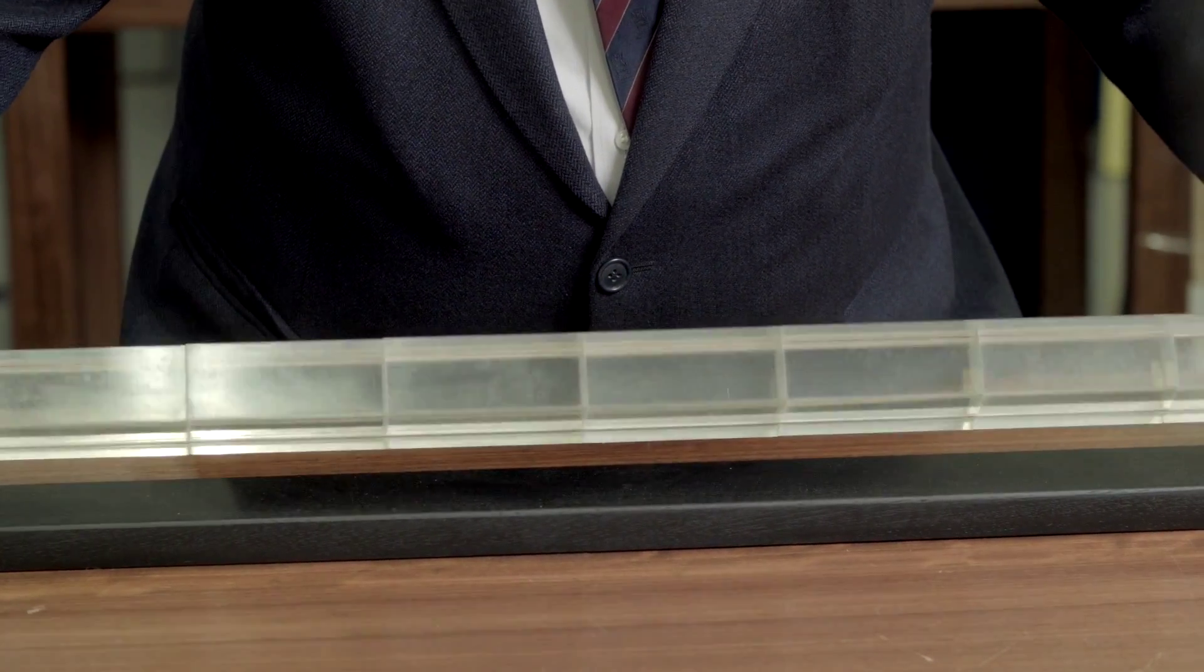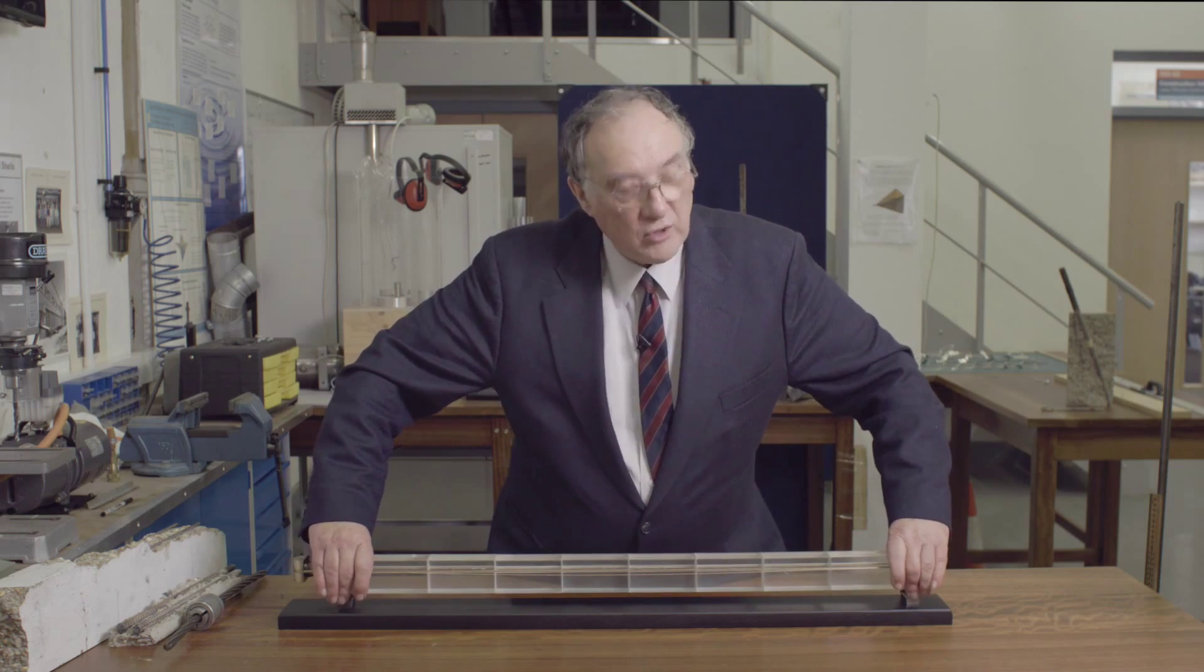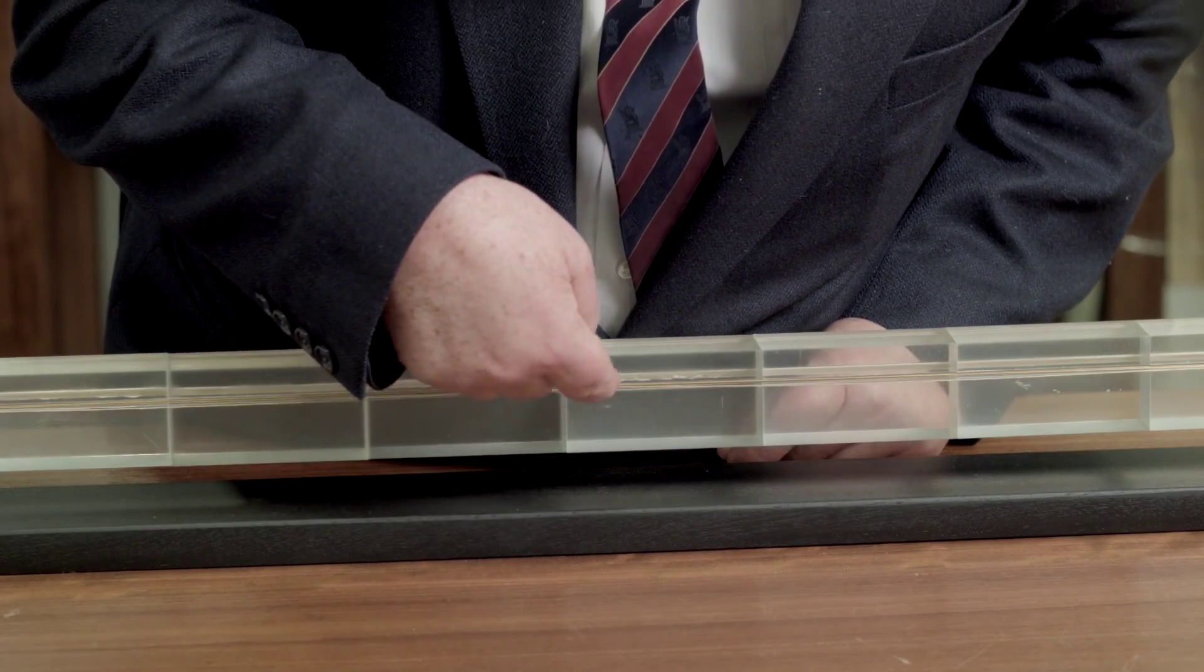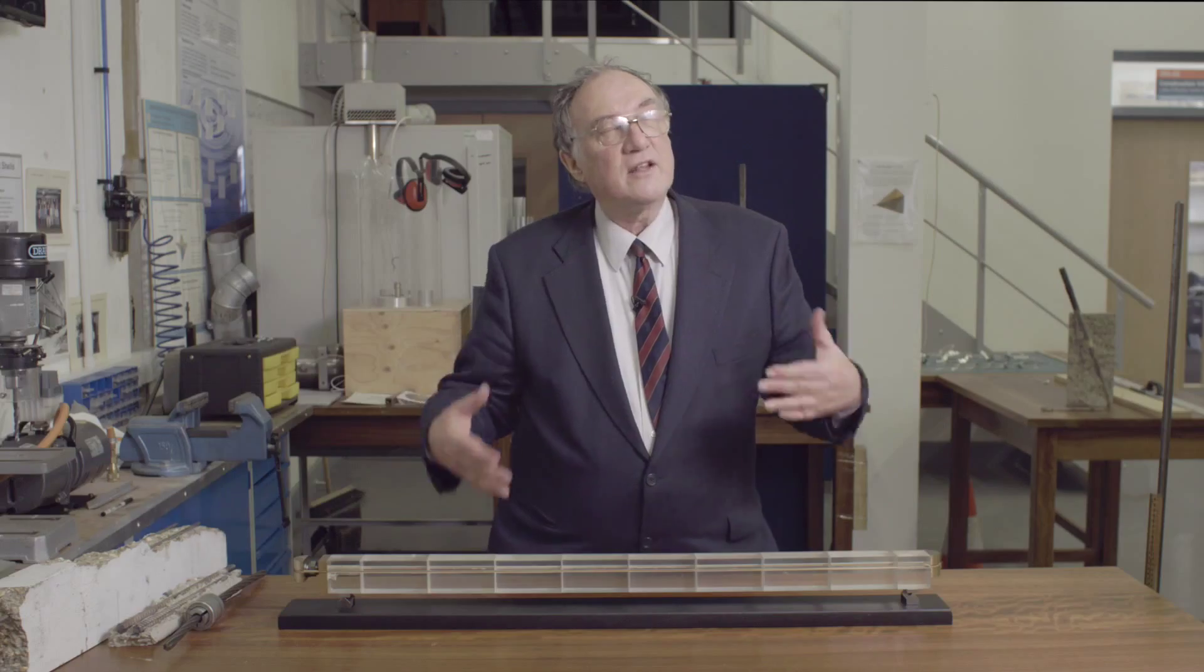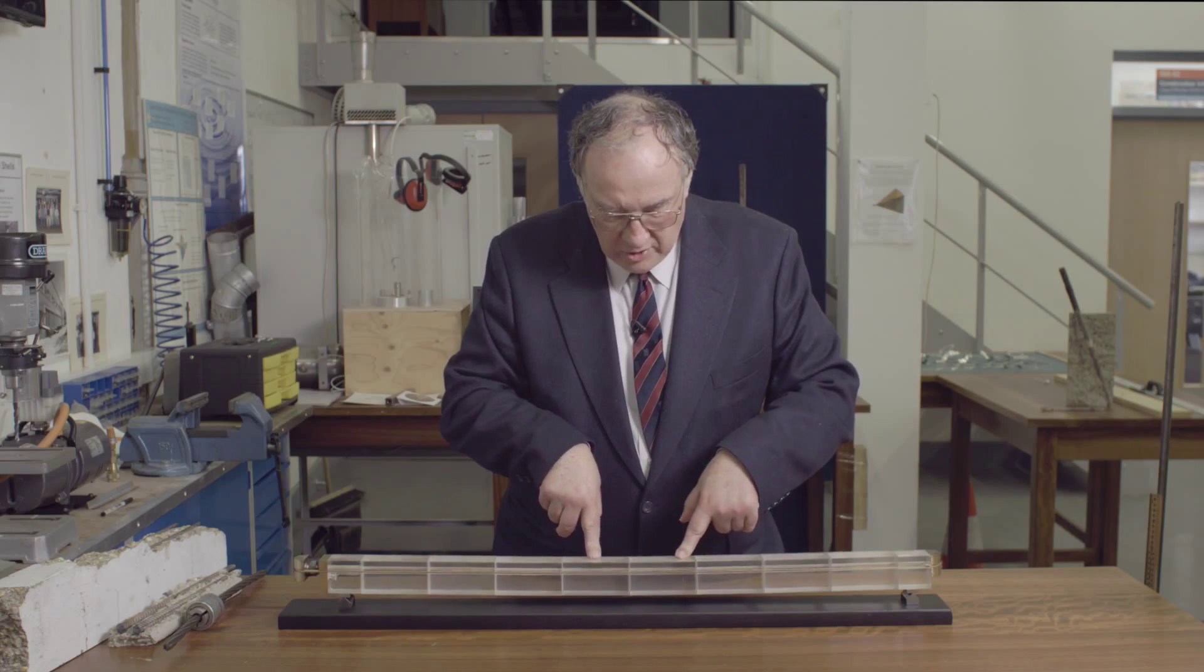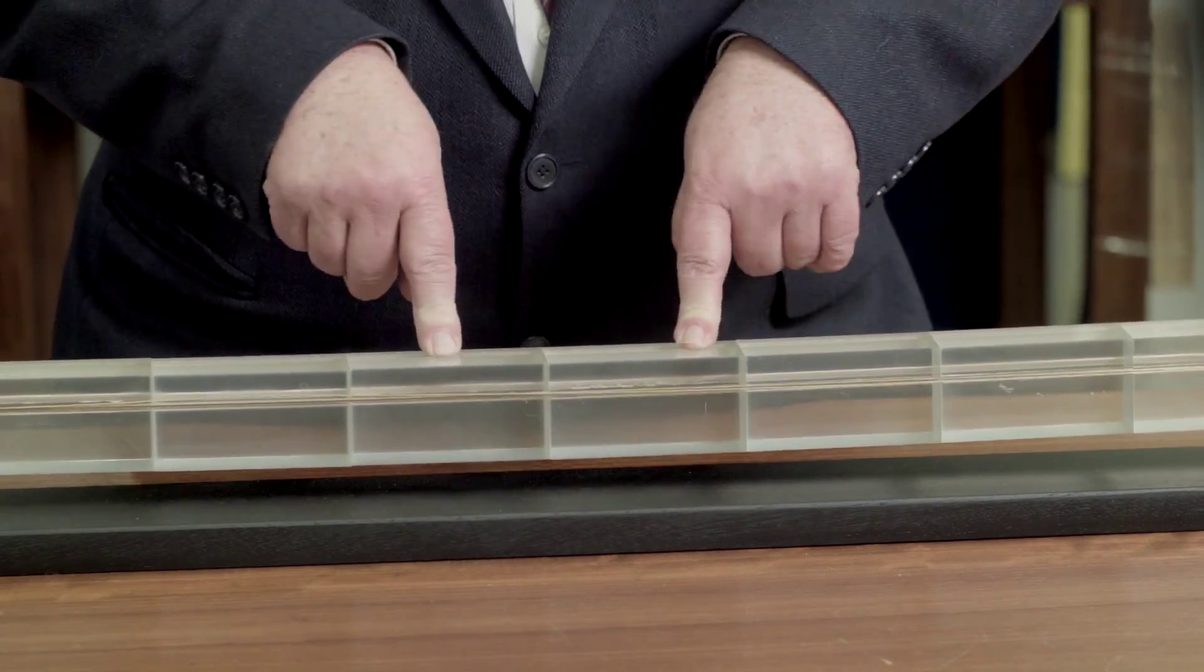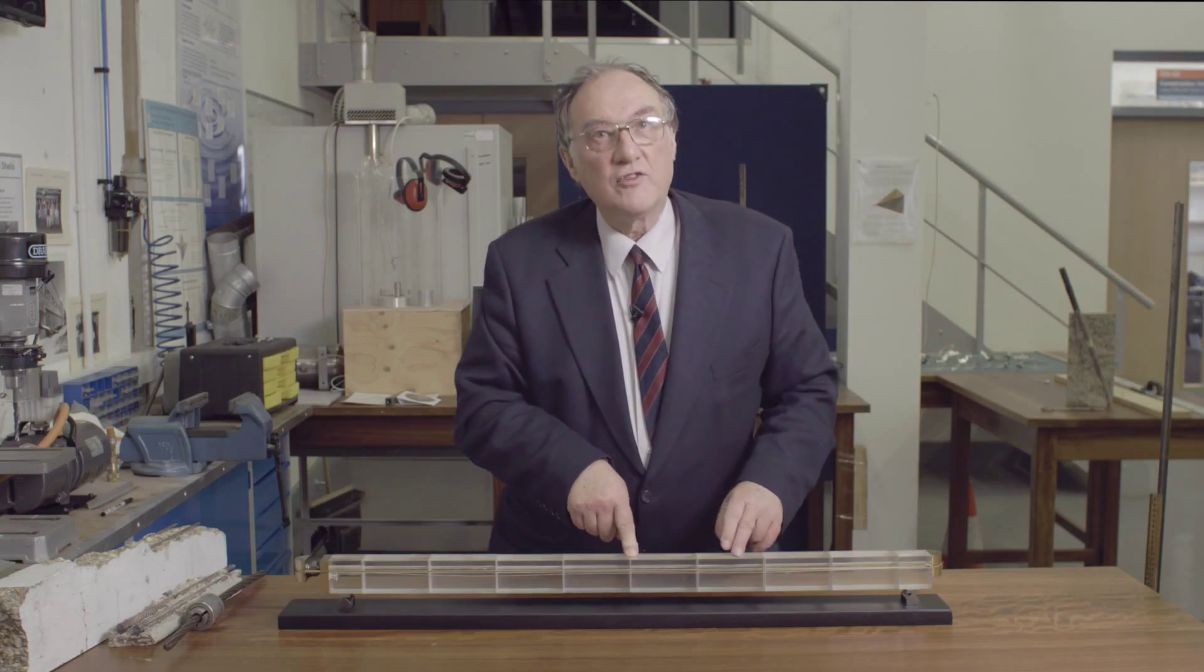If I turn the beam over, which I can do on my model but I can't do in the real world, the tendon is now towards the top of the beam. And the effect of this is that it's not good for carrying bending with tension in the bottom. So I now need to put very tiny forces onto this beam before the cracks start to open up at the bottom of the beam.